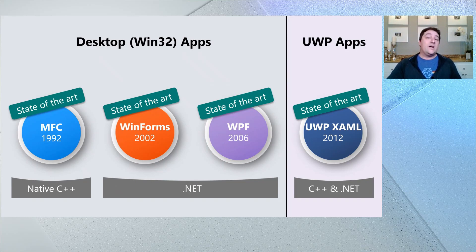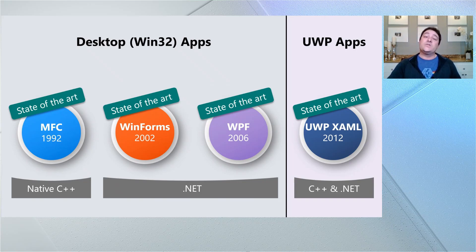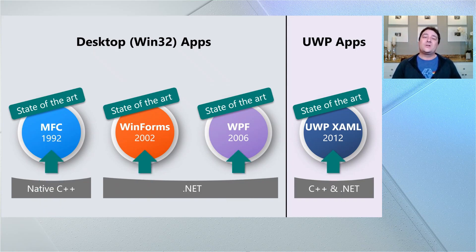If you're a Windows developer — say an MFC, WinForms, or WPF developer — and you decide you want to use UWP XAML, you also have to make your app a UWP app. For some people that's fine, but for others it can be a blocker. Security container restrictions are often the main issue. So here we are with four state-of-the-art UI frameworks from Microsoft to build Windows client apps, and one of them is just about getting to 30 years old.